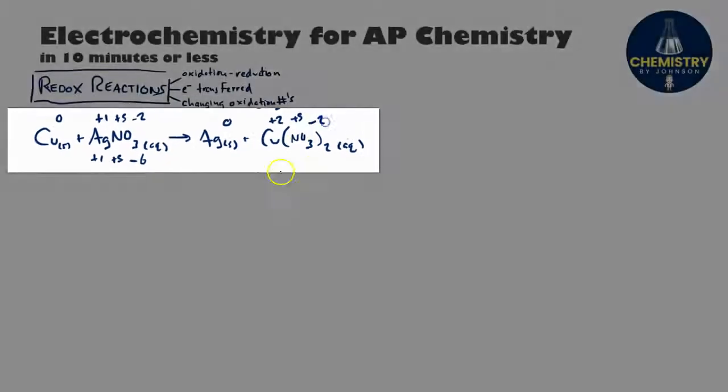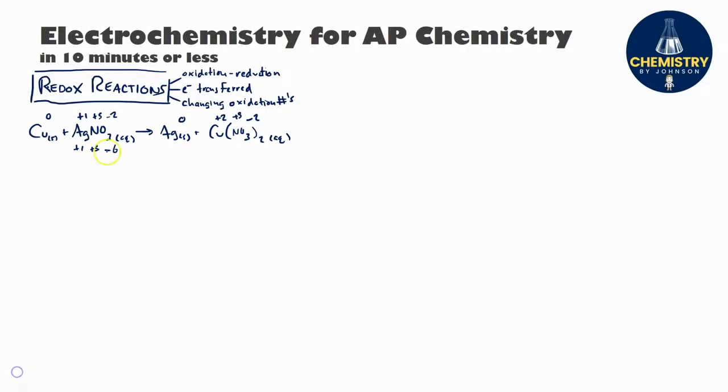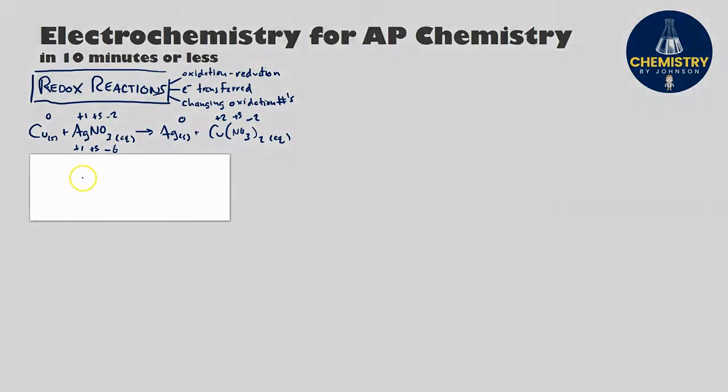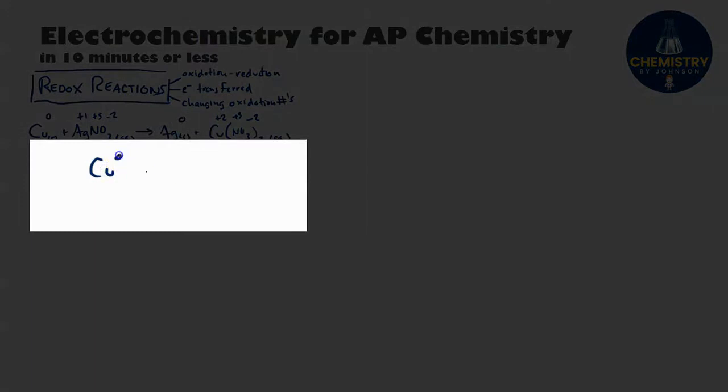After you've written out those oxidation numbers, you can see that there are some definite changes taking place, like copper that starts off in the reactants as zero and changes to copper plus two in the products, or silver that starts as plus one in the reactants but changes into silver zero in the products.